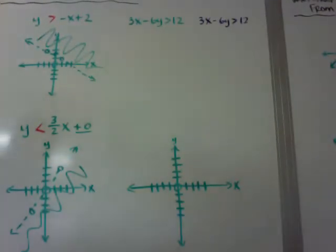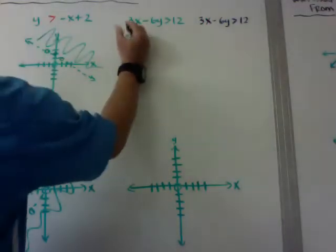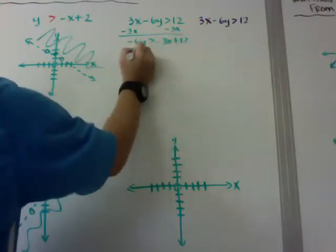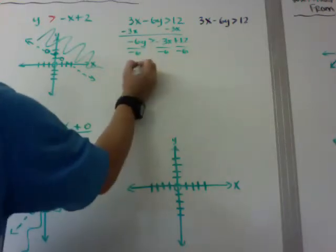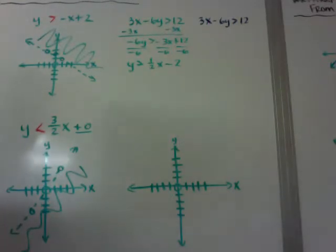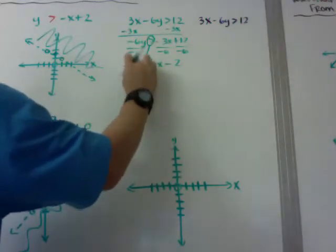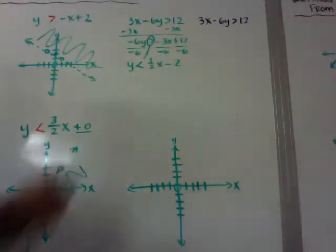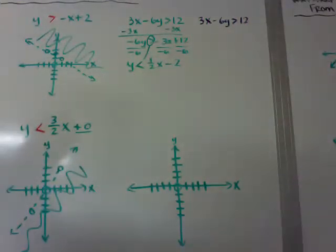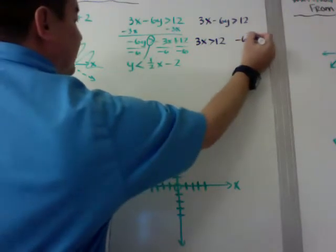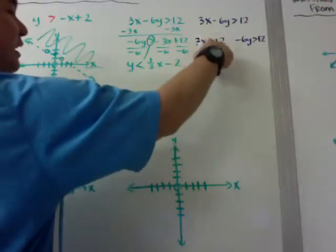Here's another example of graphing, and I'm going to solve it two different ways. The first way is changing it into slope-intercept form. Subtract 3x from both sides to get negative 6y is greater than negative 3x plus 12. Divide by negative 6, and remember — when you divide by a negative, you flip the sign! So it should be y is less than one-half x minus 2. You can also solve it using x and y intercepts since it's already in standard form.